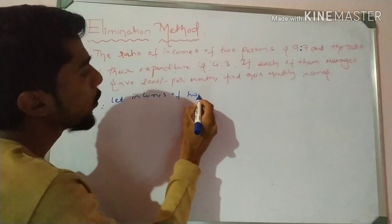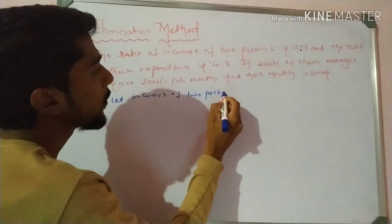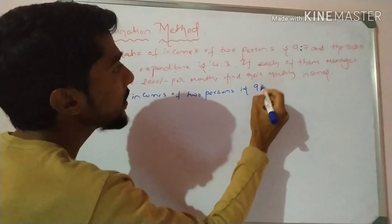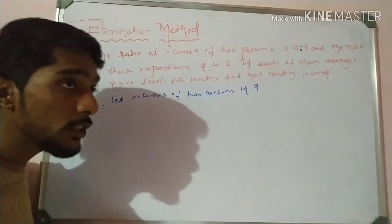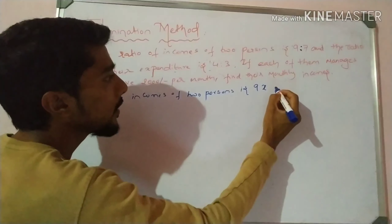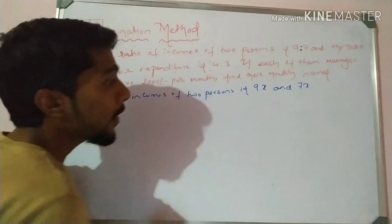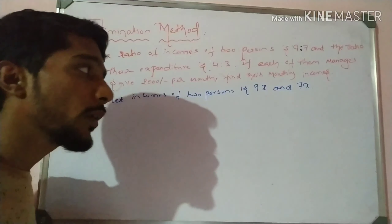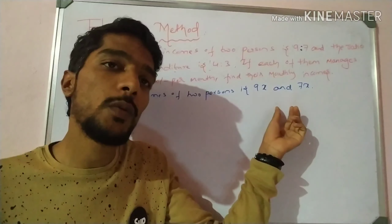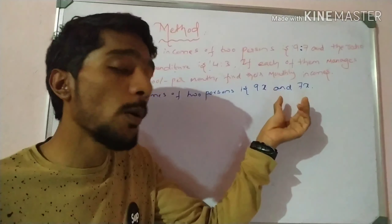I take one example to understand this method from the NCERT textbooks. The ratio of income of two persons is 9 is to 7 and the ratio of their expenditure is 4 is to 3. If each of them manages to save 2,000 rupees per month, find their monthly income.